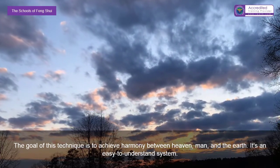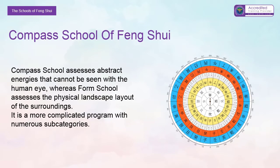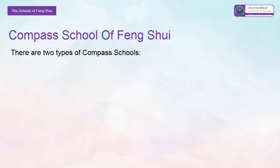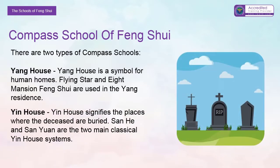Compass school assesses abstract energies that cannot be seen with the human eye, whereas form school assesses the physical landscape layout of the surroundings. It is a more complicated system with numerous subcategories. There are two types of compass school. Yang house is a symbol for human homes — flying star and eight mansion feng shui are used in the yang residence.